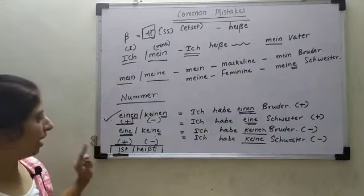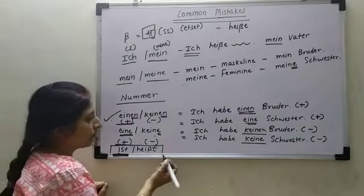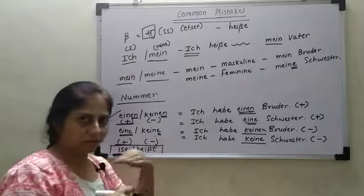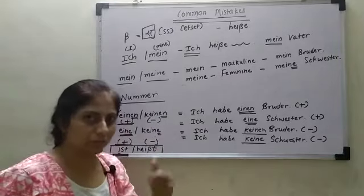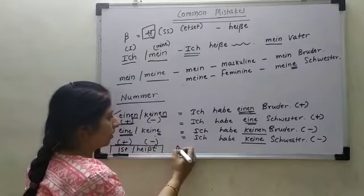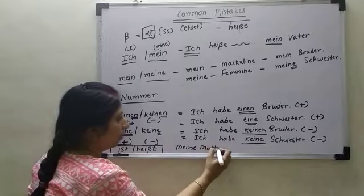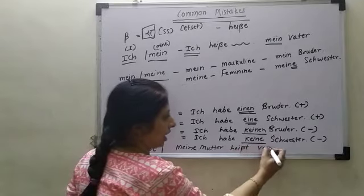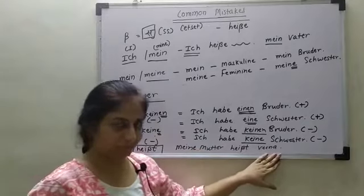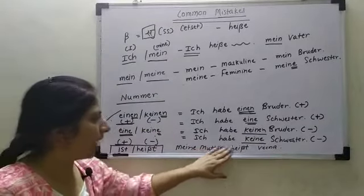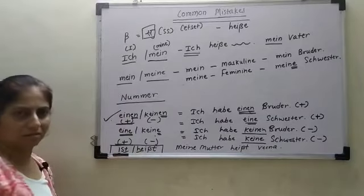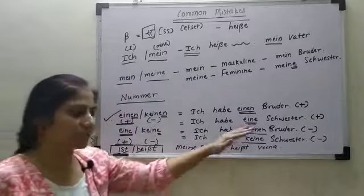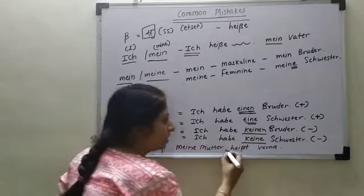One more thing: in one sentence, for this level, you have to use only one verb. For example, 'Meine Mutter heißt Vina.' In some videos I have seen students writing 'Meine Mutter ist heißt Vina' — using both verbs. That is not needed. You should use only one verb: either 'Meine Mutter heißt Vina' or 'Meine Mutter ist Vina.' That's all. In one sentence, only one verb should be used.